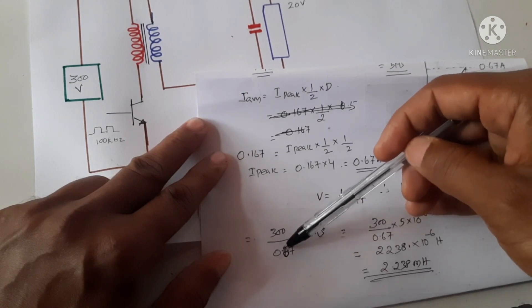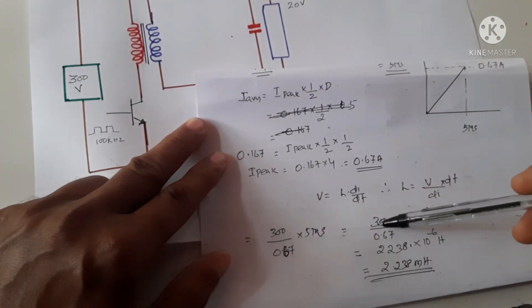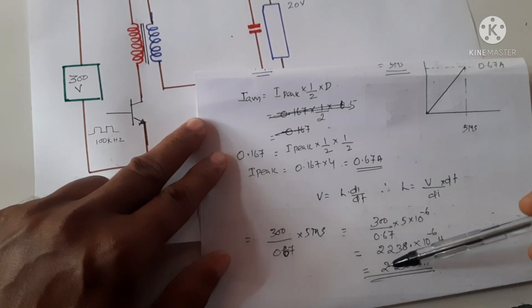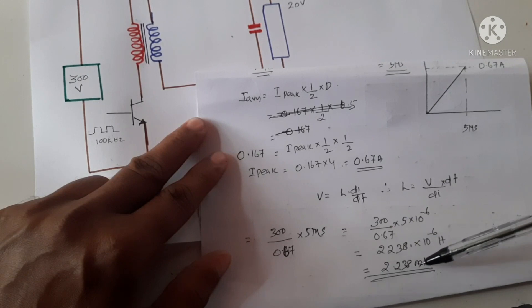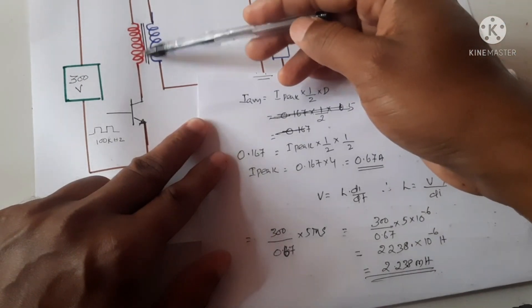So if we put all these values, we will get the value of the inductance as 2.238 millihenry of inductance needed at the primary.